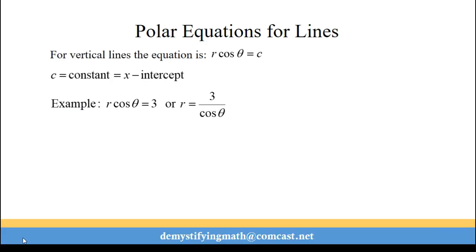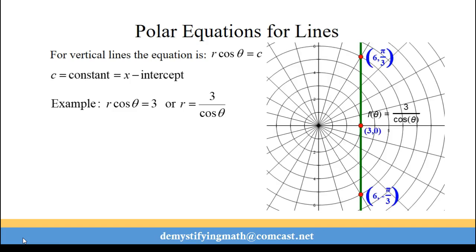If you have a vertical line then you end up with the equation r cosine theta equals c, where c is the constant or the x-intercept, or in this case where it touches the polar axis. So we have r cosine theta equals 3, or r equals 3 over cosine theta.